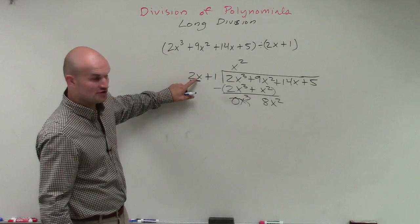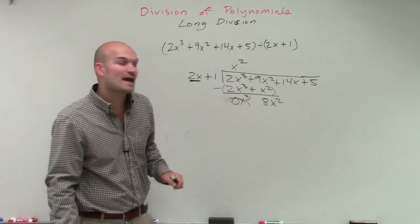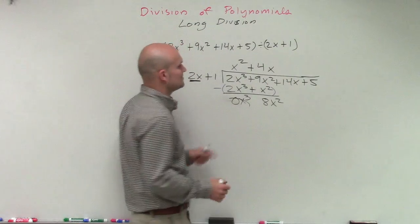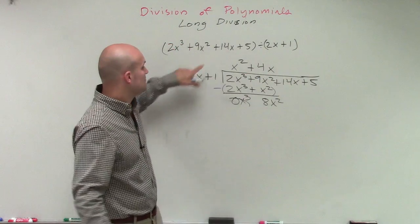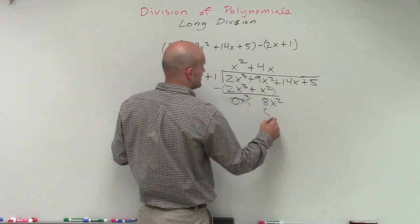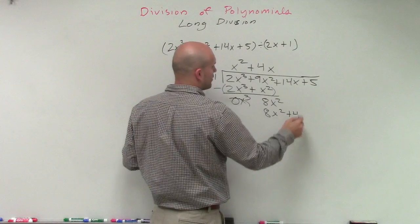Now we take our divisor, our first term of the divisor, and divide it into this term. 2x divides into 8x squared, a positive 4x times. Then I take this term and multiply it by both terms in my divisor. 4x times 2x is 8x squared, and 4x times 1 is going to be a positive 4x.